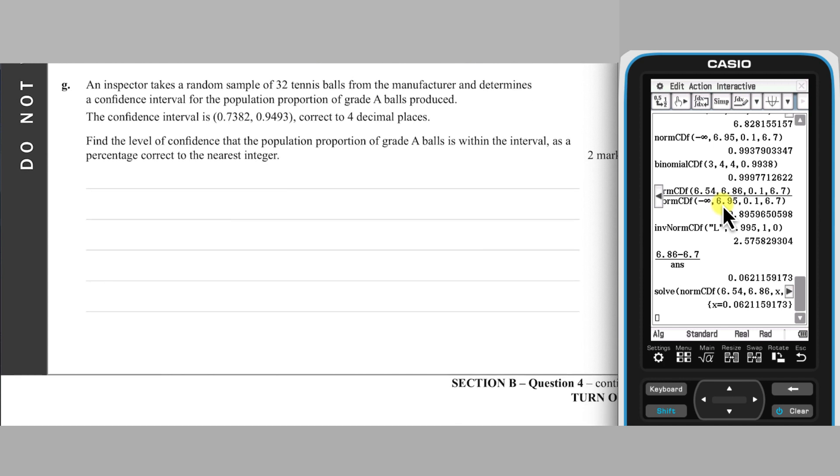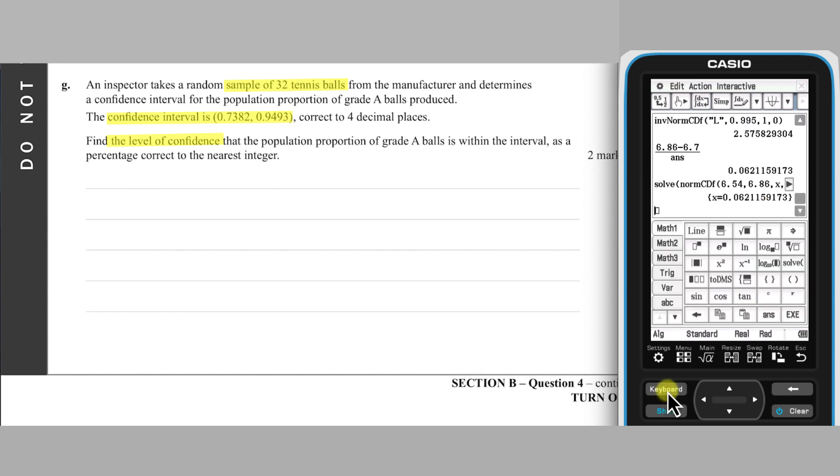Part G is about a confidence interval based on a sample of 32 tennis balls. From the interval's upper and lower bounds, we need to calculate the level of confidence. For starters, we can calculate P-hat, given that it is the average of the upper and lower bounds.